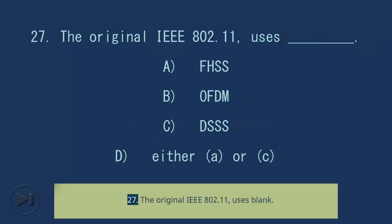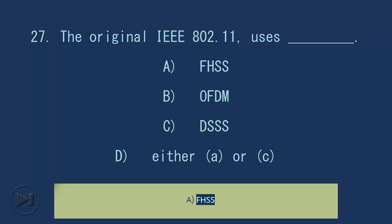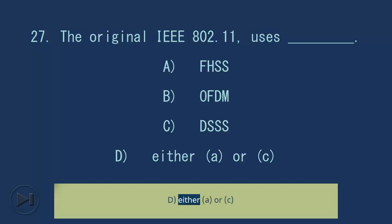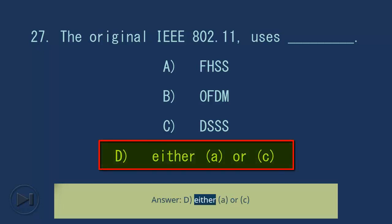Question 27: The original IEEE 802.11 uses blank. A. FHSS, B. OFDM, C. DSSS, D. Either A or C. Answer: D. Either A or C.